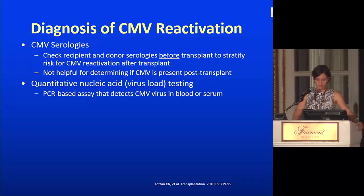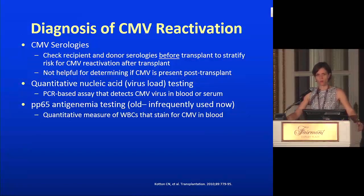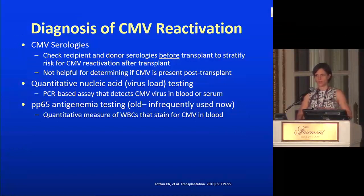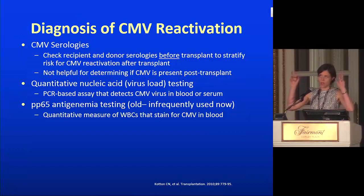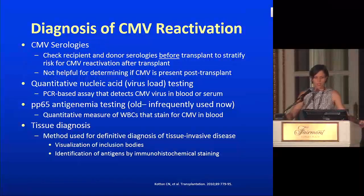The main way we detect this is by virus load testing — quantitative nucleic acid testing via PCR-based assay detecting CMV in blood or serum. PP65 antigenemia testing is still used at some centers but is fairly antiquated. It involves taking whole blood, putting white blood cells on a smear, staining them for CMV antigens, and counting positive cells — ten or more is typically considered positive. However, it depends on having a good technician and a normal white blood cell count, so it's not accurate in leukopenic patients, and we don't use it much anymore.